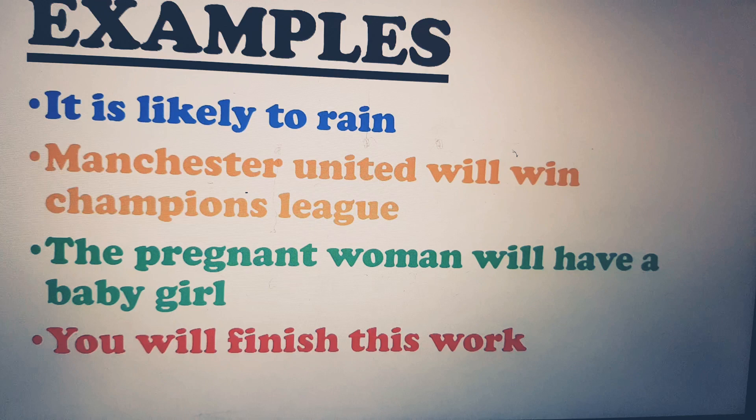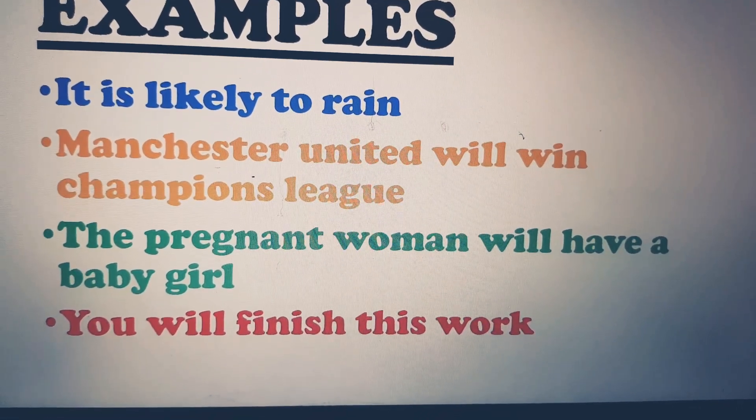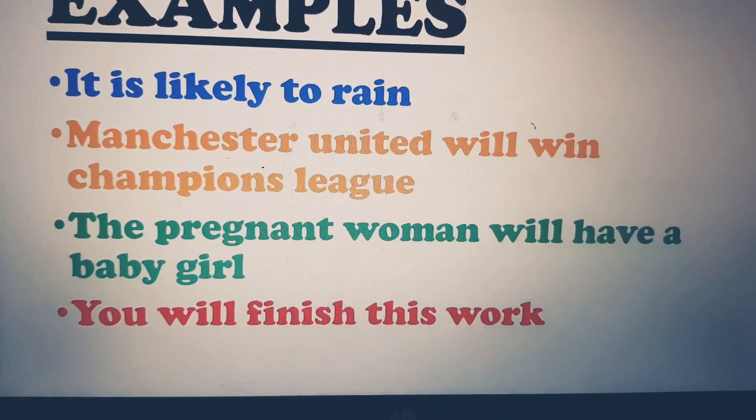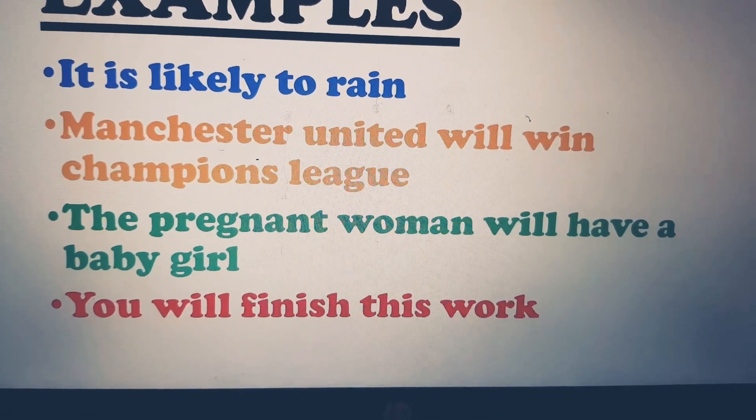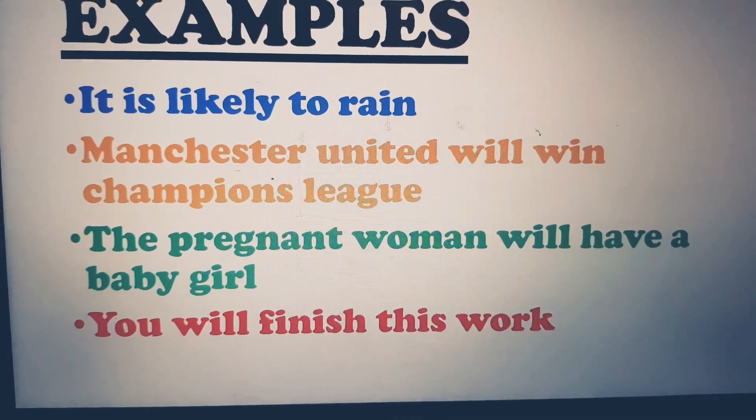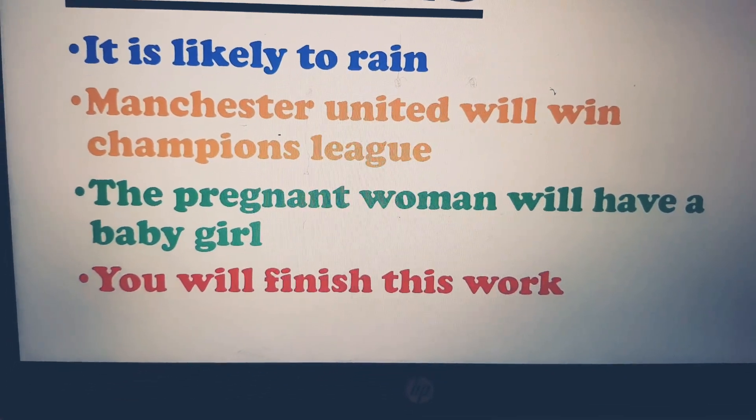For example, is it likely to rain? Will Manchester United win Champions League? The pregnant woman will have a baby girl. It could go the other way round too - a pregnant woman can have a baby boy. You will finish this work.